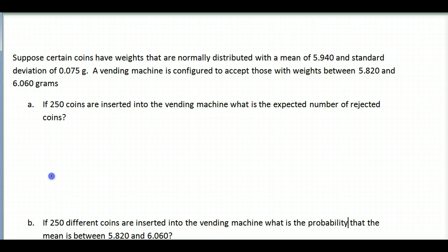The mean is 5.940 and a standard deviation of 0.075 grams. They do tell us that the weights are normally distributed, so they follow that bell shape. The vending machine is configured to accept coins with a weight between 5.820 and 6.060 grams, so it's allowing some variation.